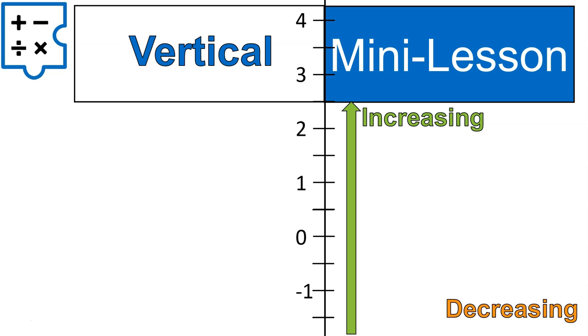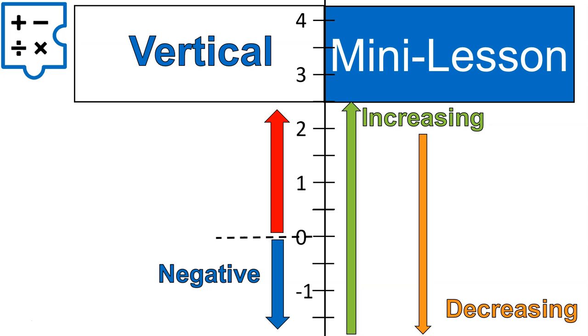You can have a vertical number line with all of these same factors. Up is increased, down is decreasing, zero is marked there, and everything below the zero is a negative, everything above the zero is a positive. In our examples, we're going to focus mainly on horizontal number lines, but it's good to know that these do exist in a vertical way as well.